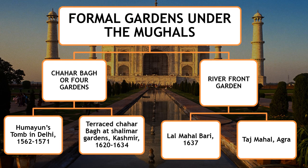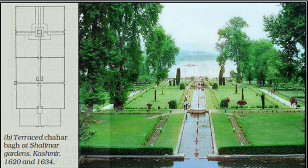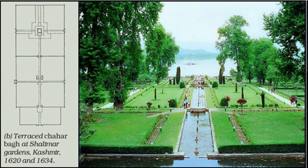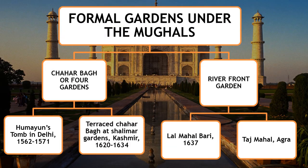Examples of formal Mughal gardens: one is the chahar bagh, or four gardens, which can be seen at Humayun's tomb in Delhi. Another example is the chahar bagh at Shalimar Gardens in Kashmir — also rectangular-shaped gardens. Another style was the riverfront garden, where in front of the main structure there would be a garden, and at the back there would be a river or water body.